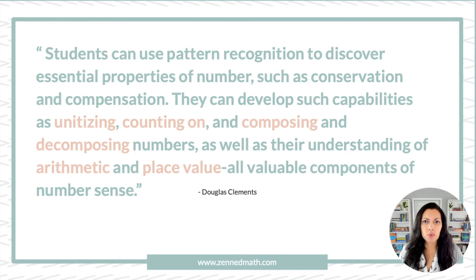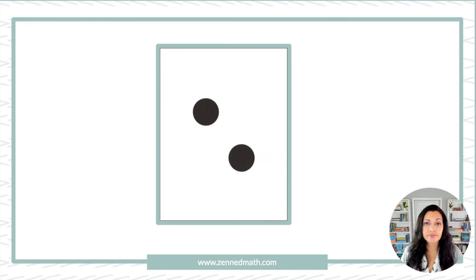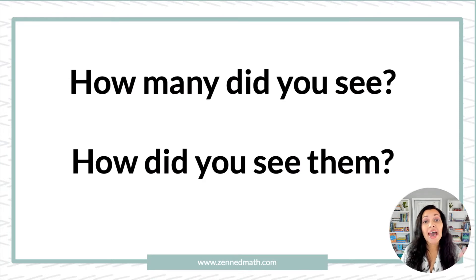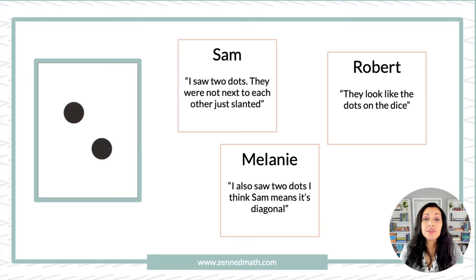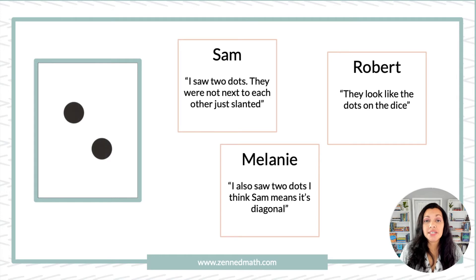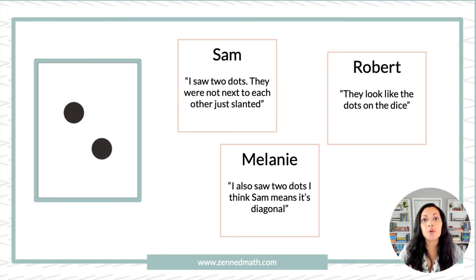Let's take a look at how it would work. I'm going to flash an image. How many did you see and how did you see them? With subitizing, you show students a quick image like we just did. And teachers afterward will ask, how many did you see and how did you see them? Meaning, what was the arrangement, how did you see them, in what form? As the students talk about it, the teachers write down what the students are saying or picturing.